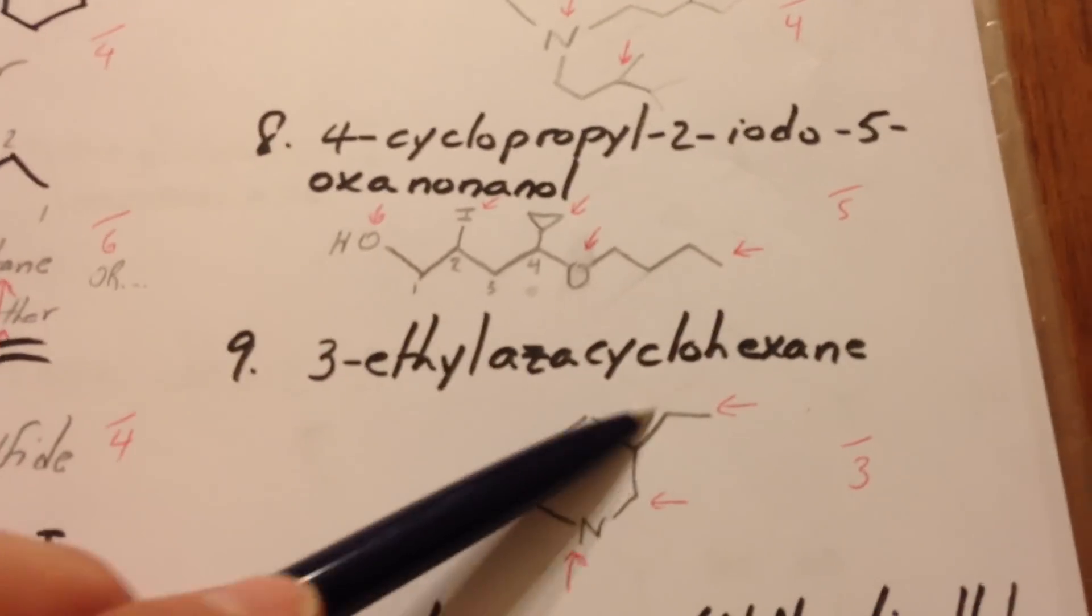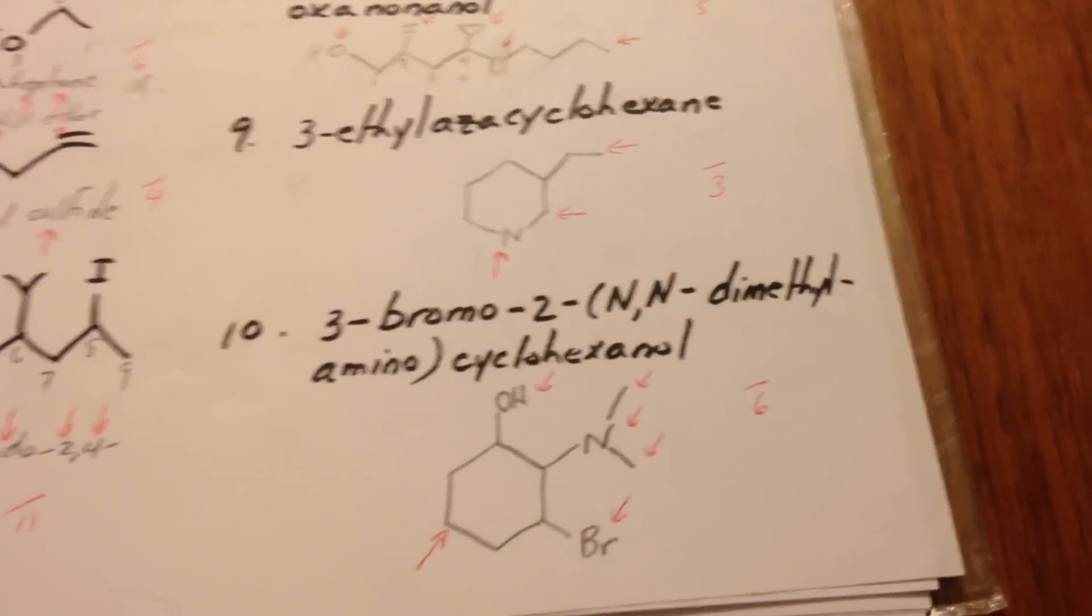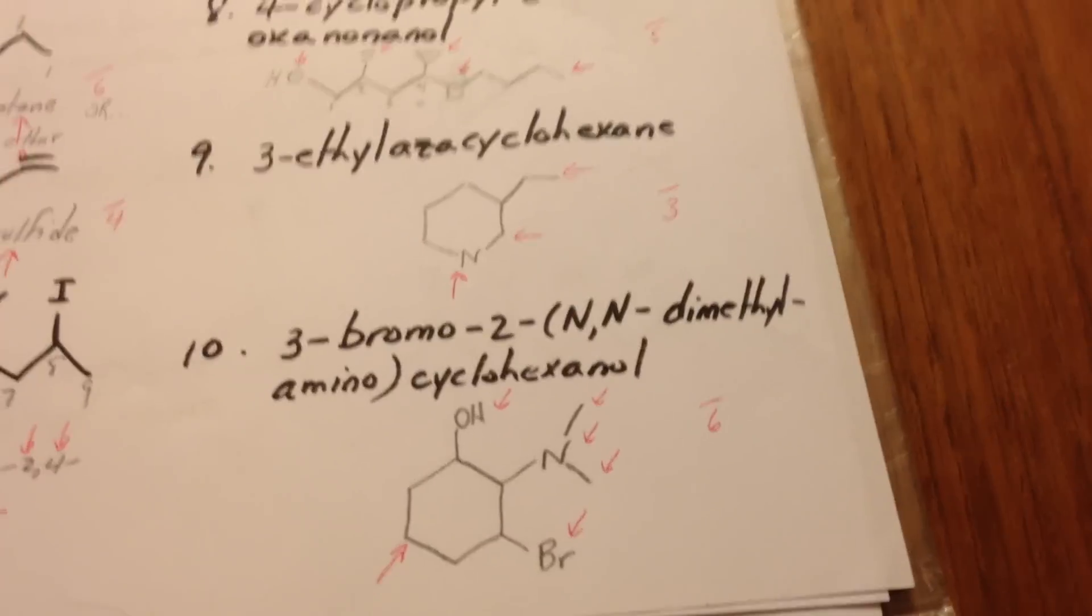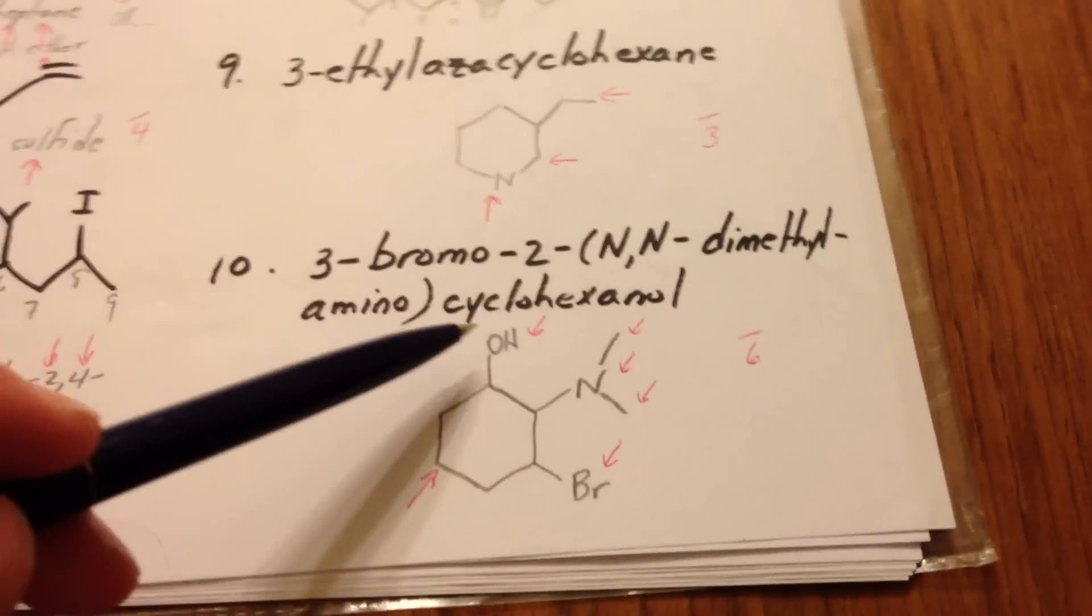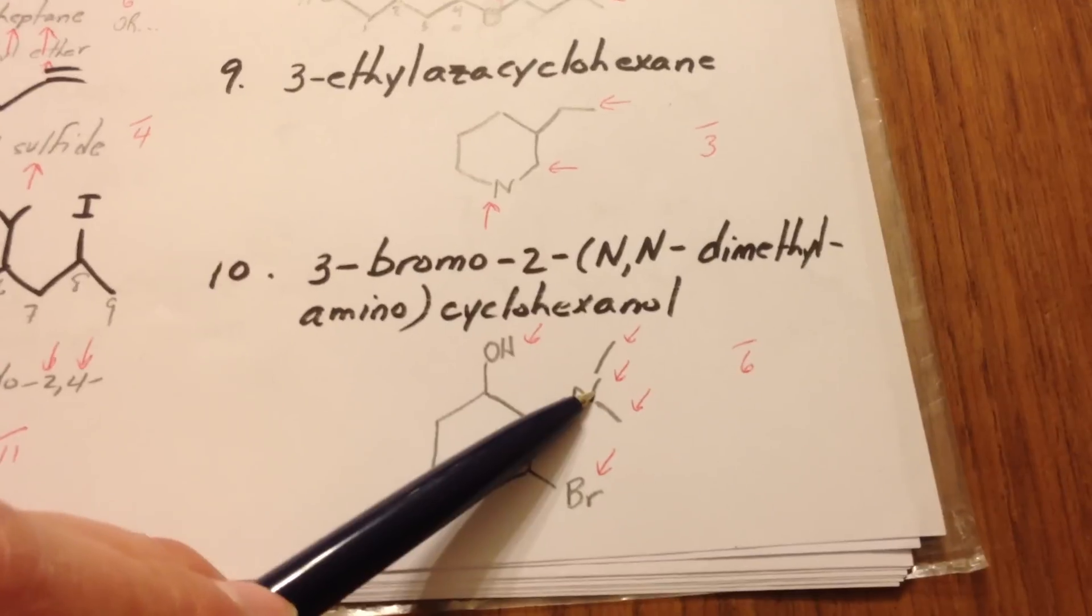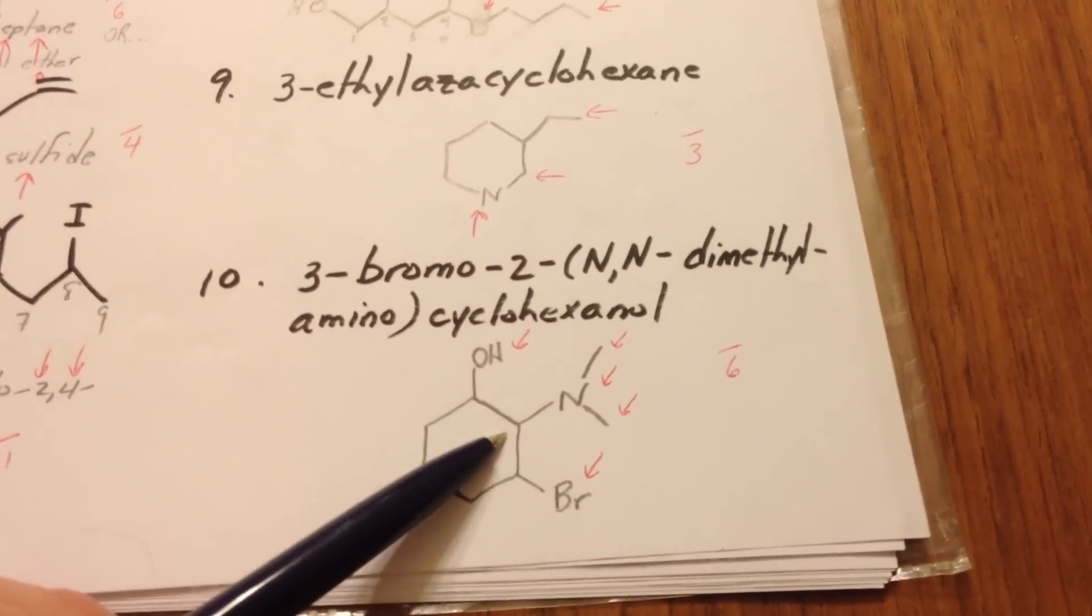The tenth molecule is 3-bromo-2-(N,N-dimethyl-amino)-cyclohexanol. So the highest priority group is the hydroxy group, followed by the amine, followed by the bromine group. So we number it one, two, three.